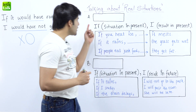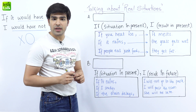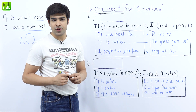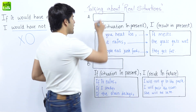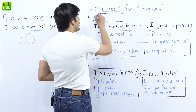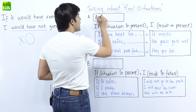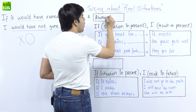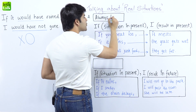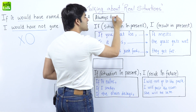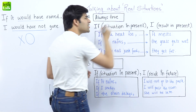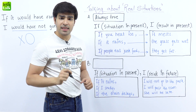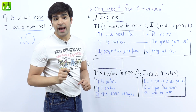The first situation is called the 'always true' situation — something that is always true, something that is a general fact. Let's understand this using an example.